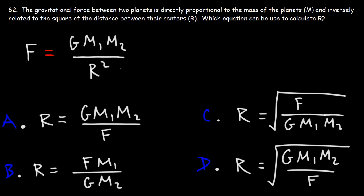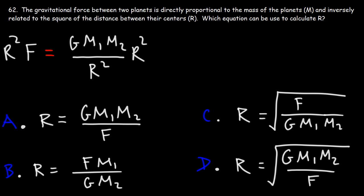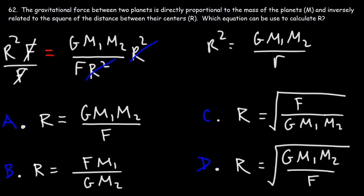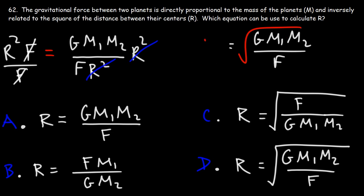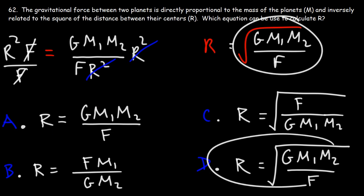We don't want R on the bottom of a fraction, so let's multiply both sides by R squared. Next, divide both sides by F. Now we have R squared equal to GM1M2 over F. To get rid of the square, we take the square root of both sides — the square root of R squared is simply R. So R equals the square root of GM1M2 over F, which means D is the right answer.